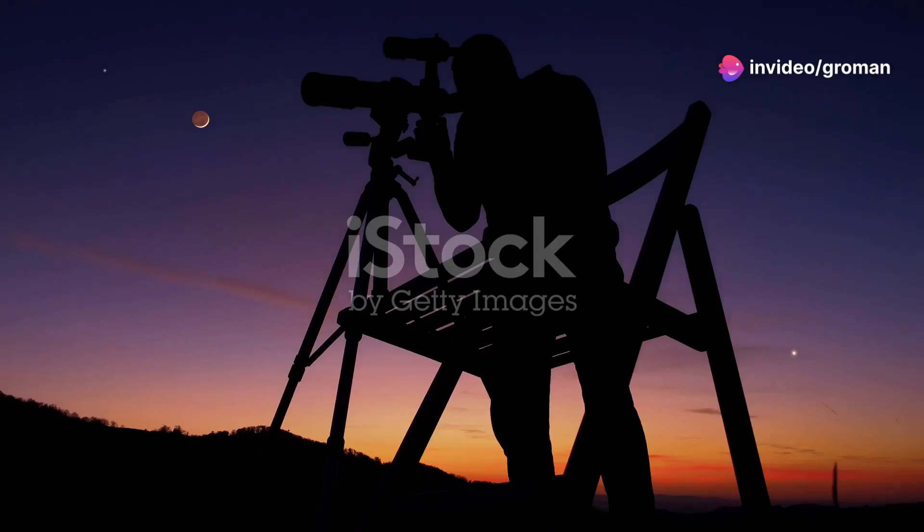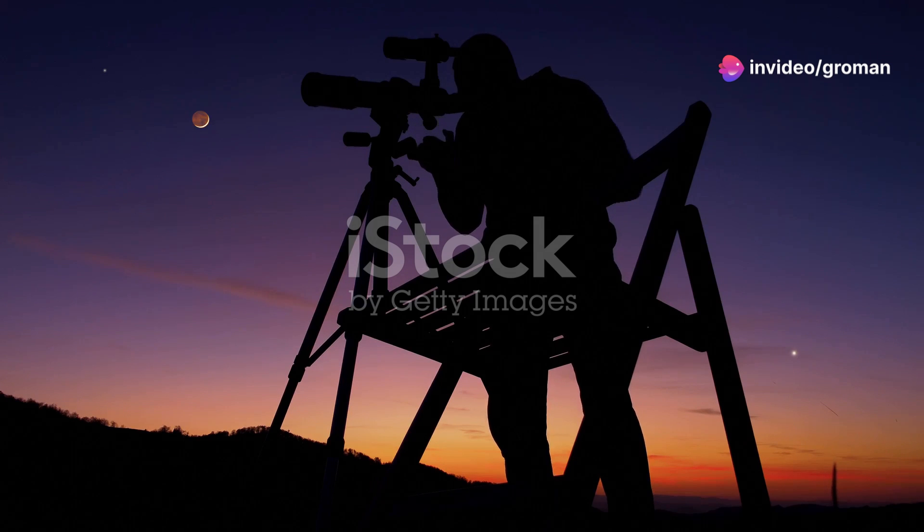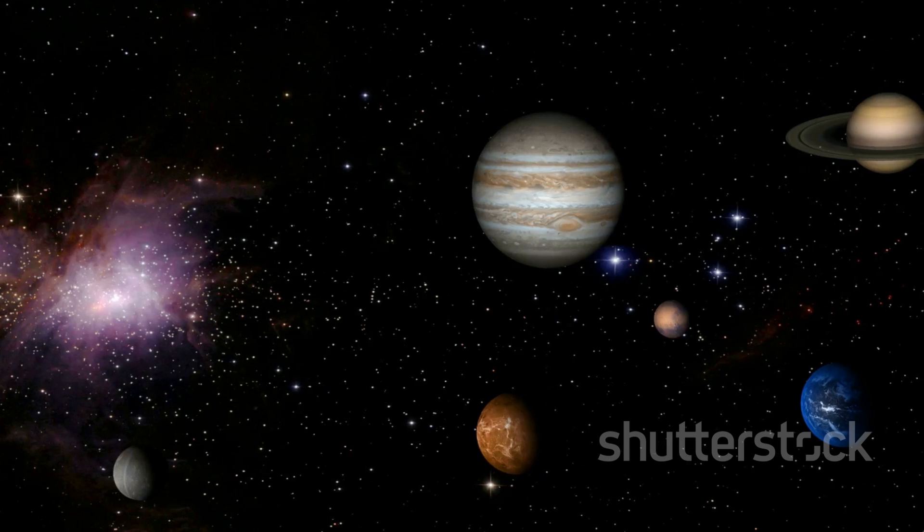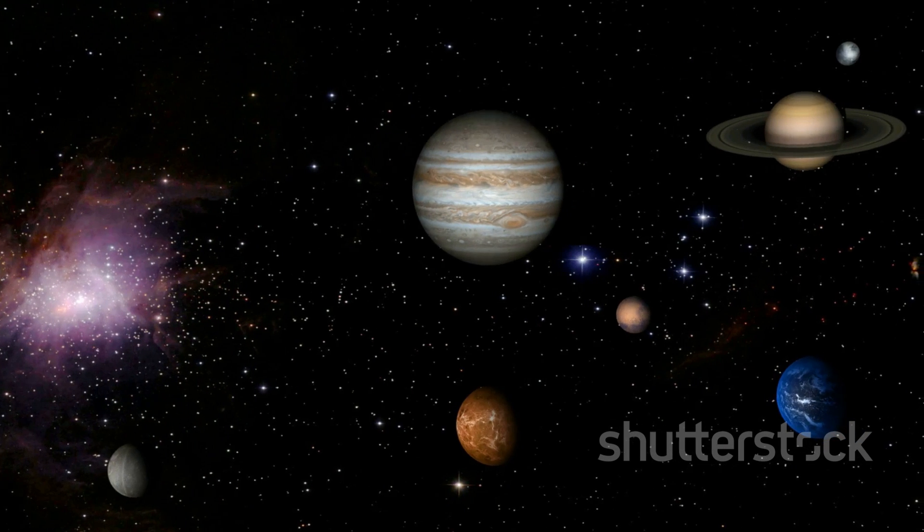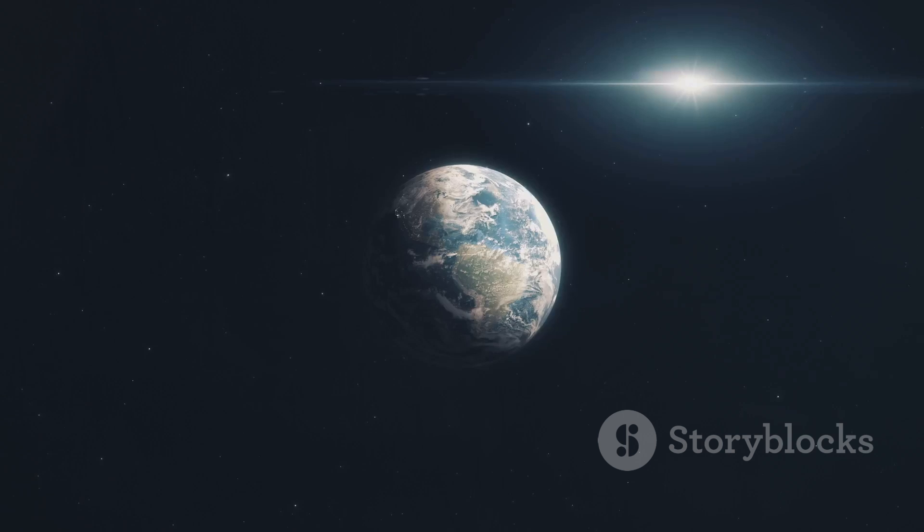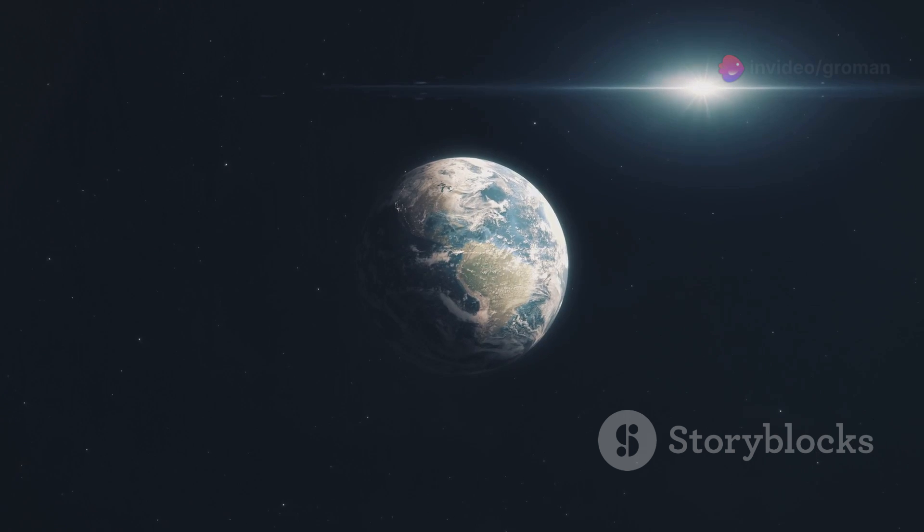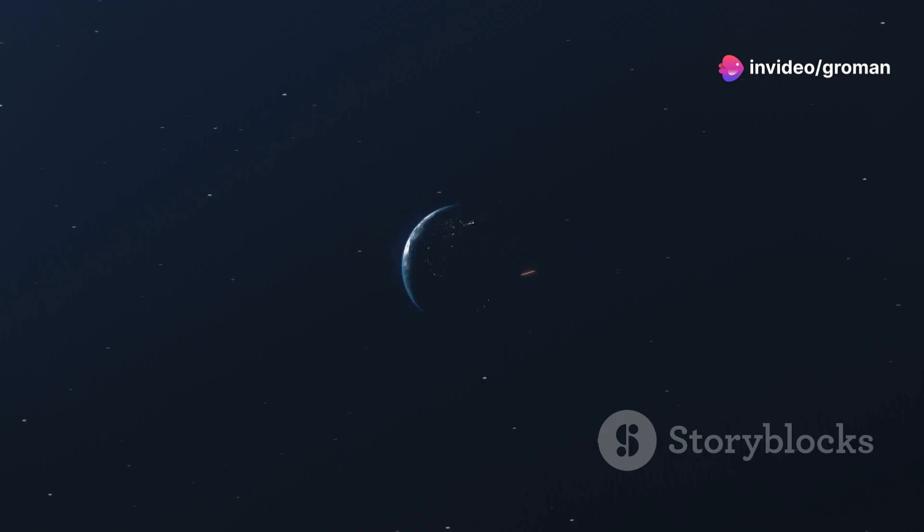Imagine looking up at the stars and wondering, is there another planet out there where life can thrive? Well, it turns out life as we know it has a pretty long shopping list. So what exactly does a planet need to support life? Let's dive into the ultimate planetary checklist, from liquid water to magnetic shields.